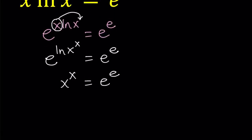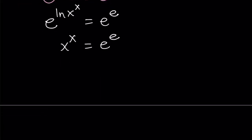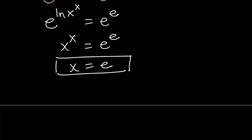So now this should tell you something. If x to the power x is equal to e to the power e, at least you can tell that x equals e is a possible solution, because e to the power e equals e to the power e. But the million dollar question is: is this the only solution?